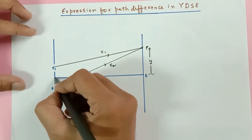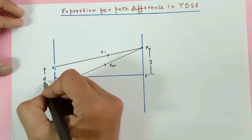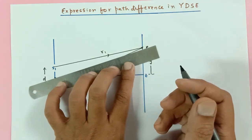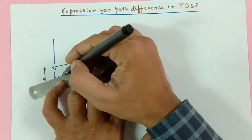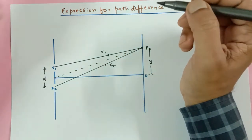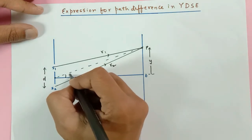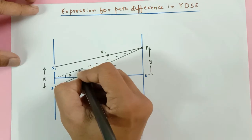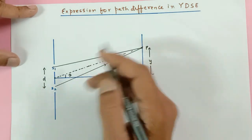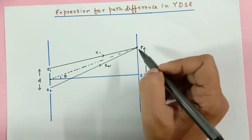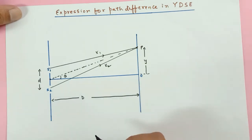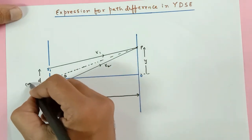The distance between s1 and s2 is d. I connect the midpoint of s1 and s2 to point P, and I call this angle theta. Suppose at point P there is some fringe produced due to the superposition of light waves from s1 and s2 — it may be a dark fringe or a bright fringe. The distance from the slits to the screen is capital D.